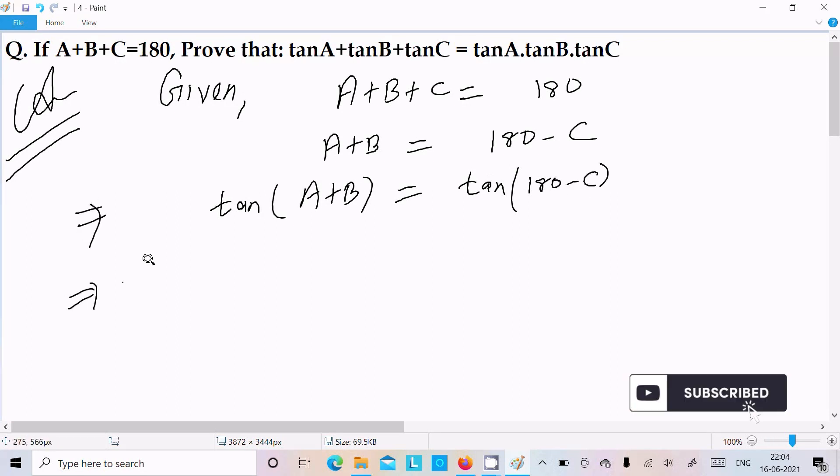Use tan A plus B formula, that is tan A plus tan B divided by 1 minus tan A into tan B.